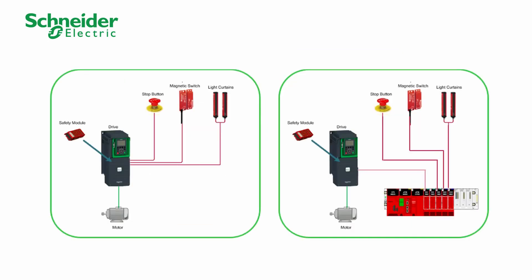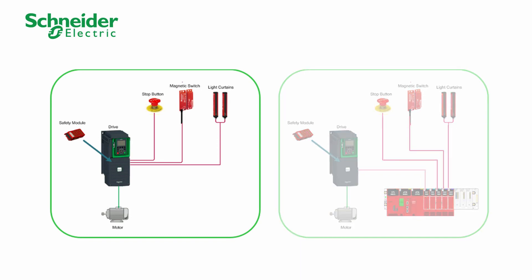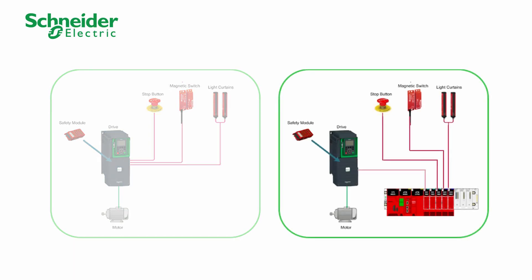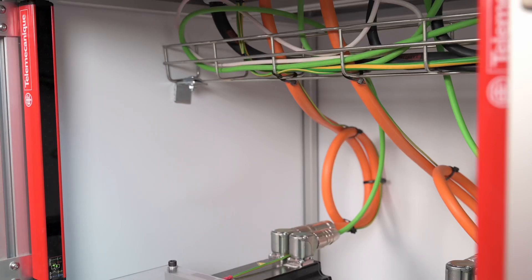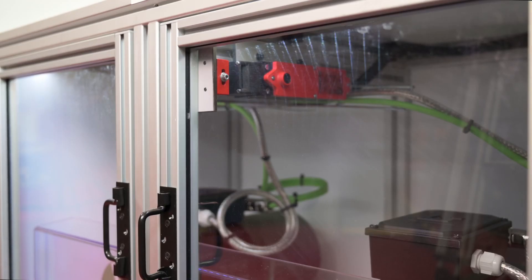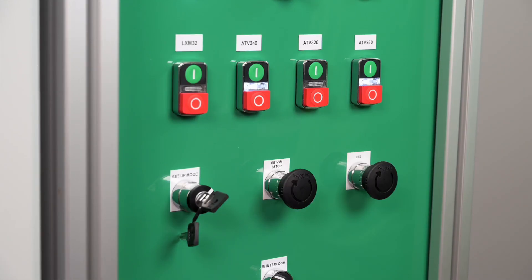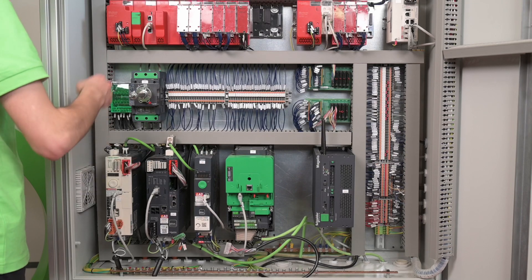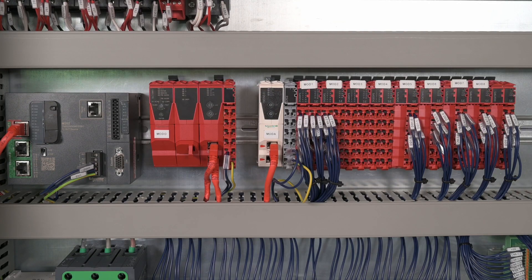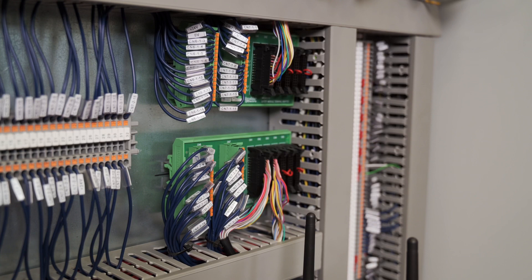There are two ways we can activate the safety functions. The first is by connecting the safety sensors directly to the safety module. The second possibility is by connecting sensors and the safety module to the M580 safety PLC. We have safety sensors like light curtains, safety limit switches, and emergency stops, connected through terminal adapters via the safety PLC or directly.